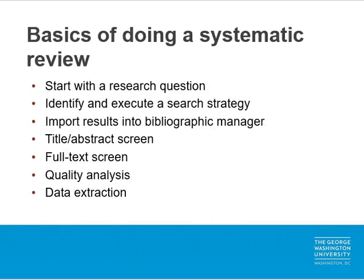To begin with, let's look at the basic steps in performing a systematic review. I want to review these, as we'll later on see how using Covidence can help streamline the performance of many of these steps. A systematic review begins with the creation of a research question, which then helps in the creation of an appropriate search strategy. When this search strategy is executed, the resulting list of citations will be collected and deduplicated.